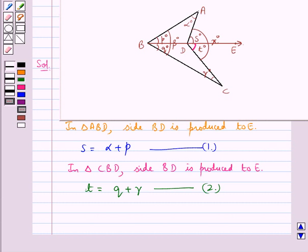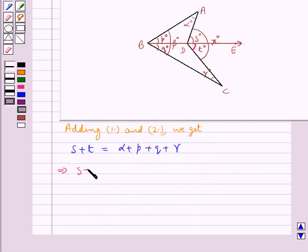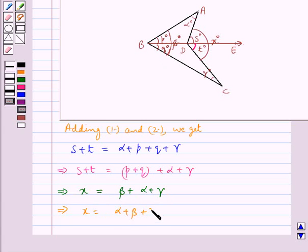Adding equations 1 and 2, we get S plus T equals alpha plus P plus Q plus gamma. That is, S plus T equals P plus Q plus alpha plus gamma. Now we know S plus T equals x. So this gives us x equals P plus Q, which is beta, plus alpha plus gamma. That is, x equals alpha plus beta plus gamma.